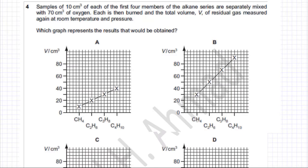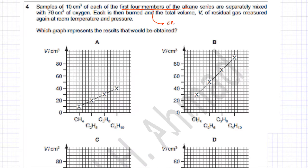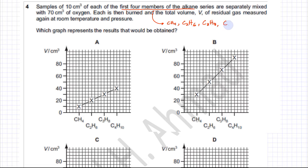This question is about gas volumes. There is a sample of 10 cm³ each of the first four members of the alkane series. The first four members of the alkane series are methane CH4, ethane C2H6, propane C3H8, and butane C4H10.